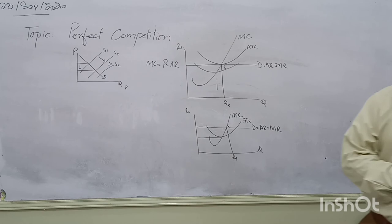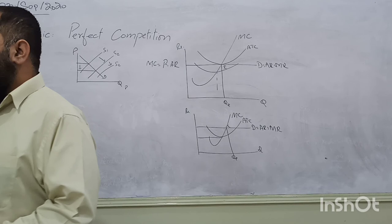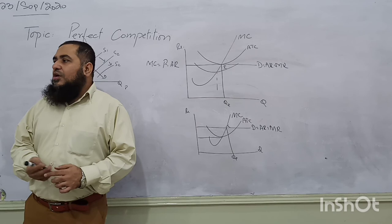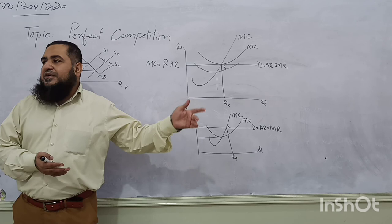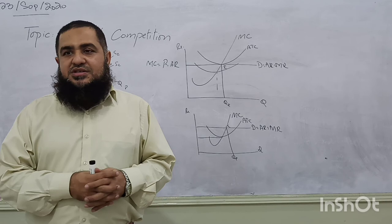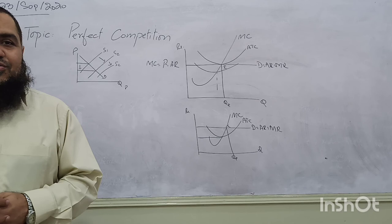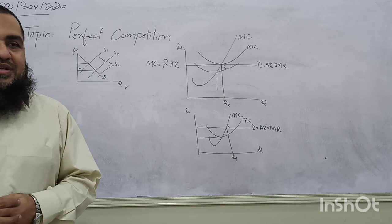By tomorrow, we will conclude our perfectly competitive market structure. And by next week — on Friday — we will be starting monopoly, another market structure. We are studying producer behavior: how a producer behaves when facing perfect competition or imperfect competition. There are many different market structures. This is becoming more interesting — how to learn these concepts. Be attentive; this is a very good topic — the study of producer behavior. If you are studying management sciences, definitely these things will help you. Thank you for today.